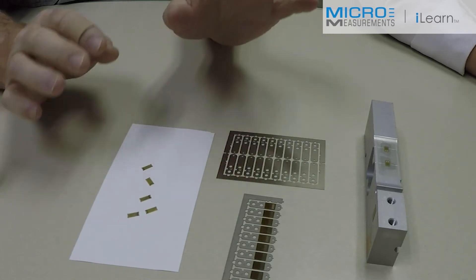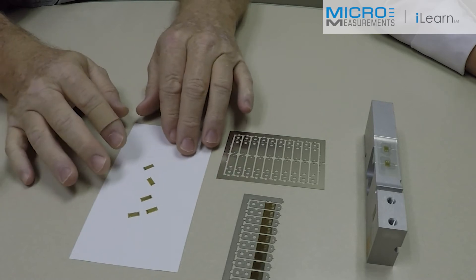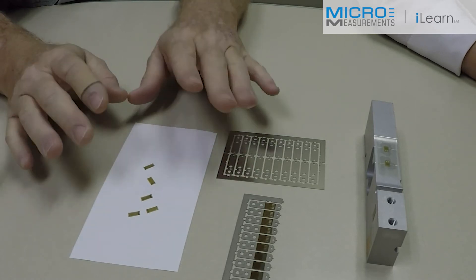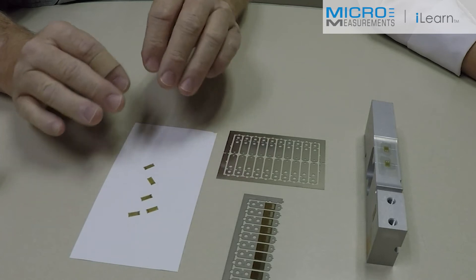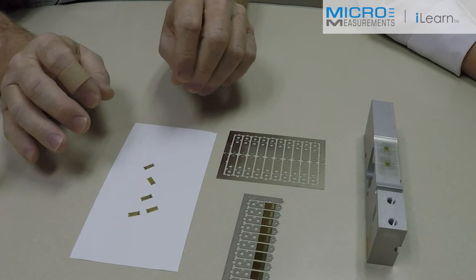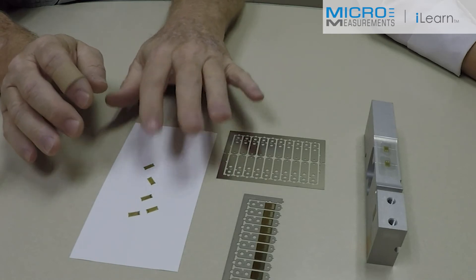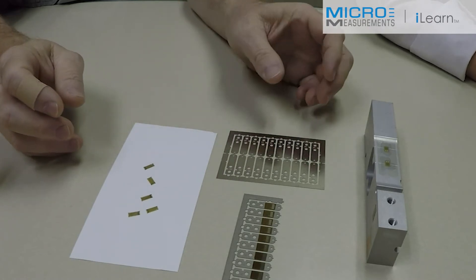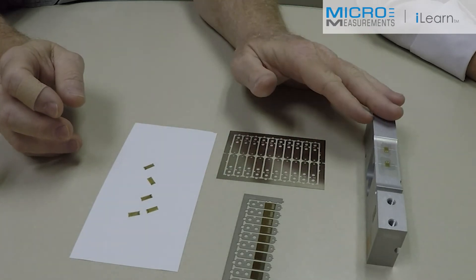What we do is during the manufacturing process, we apply adhesive to the back of the gauge, then B-stage it, which basically means drying it so that all the solvents are driven off. It's dry to the touch, doesn't attract lint, and can then be placed onto the spring element.